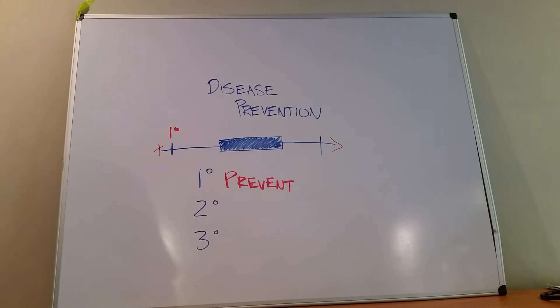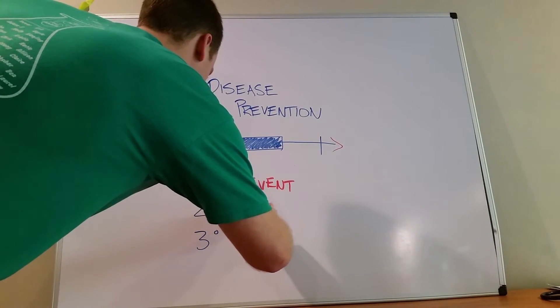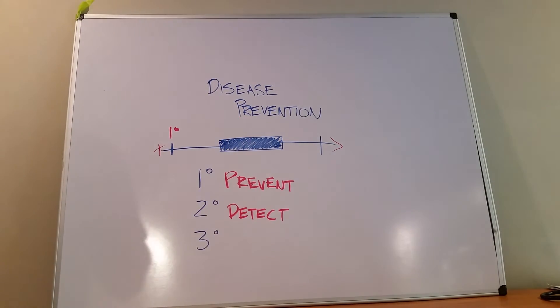Secondary disease prevention is going to be all about detection. So we've already tried to prevent it. And now we said, hey, we did the best that we could to try and prevent diverticulosis or to prevent colon cancer, to prevent infectious disease. But now we need to detect it.